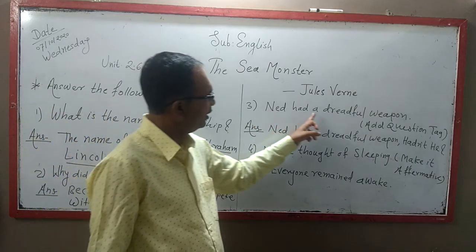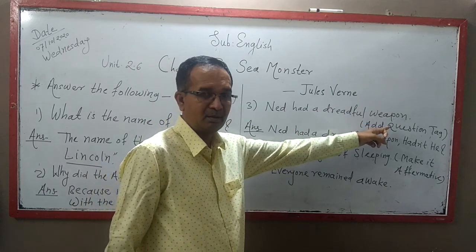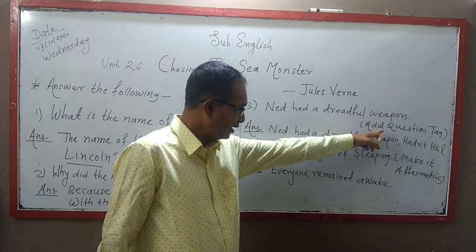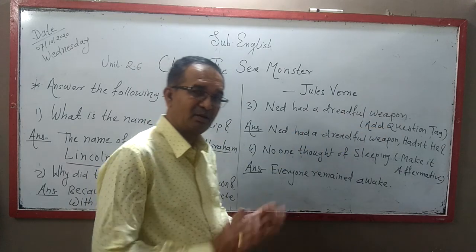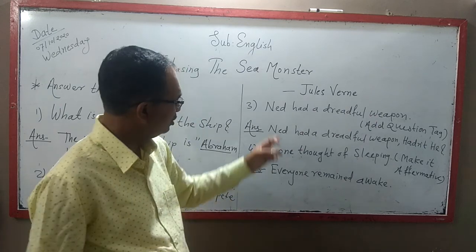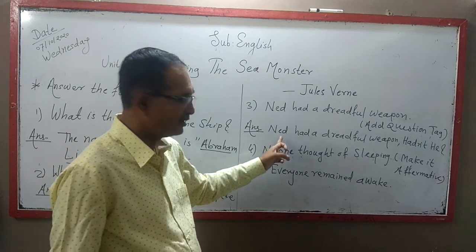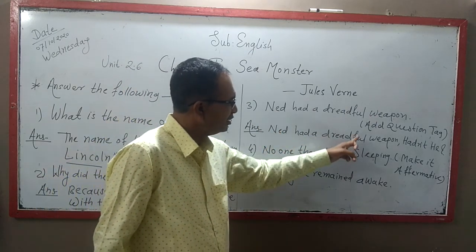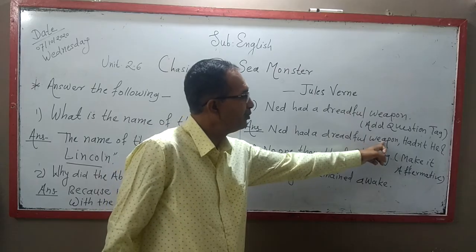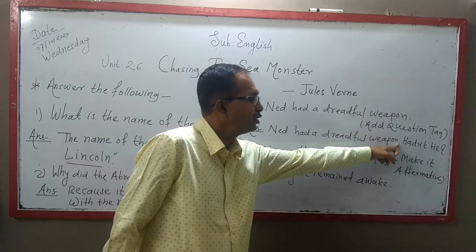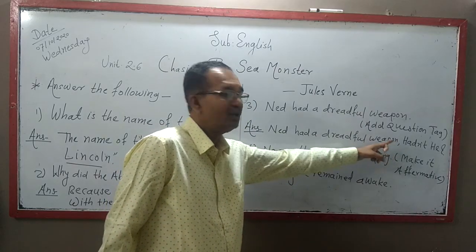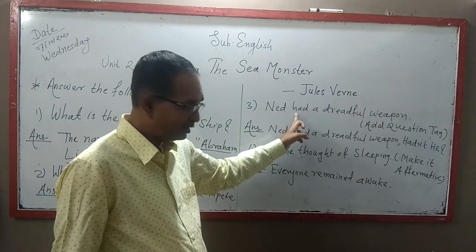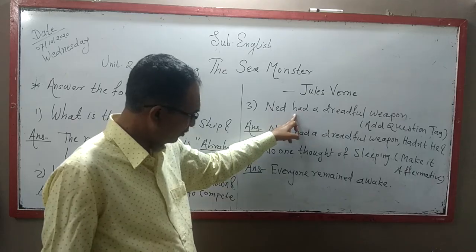Third question is a grammar question. The sentence is: 'Ned had a dreadful weapon.' You have to add a question tag. The rule is: write the sentence as it is, then add a comma. In this sentence the auxiliary verb is 'had.'